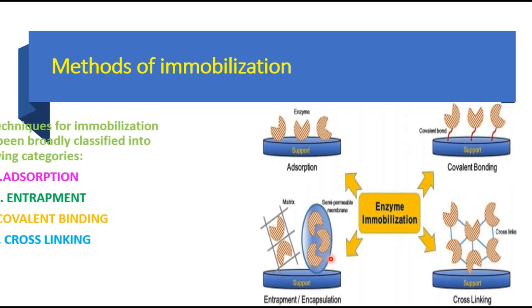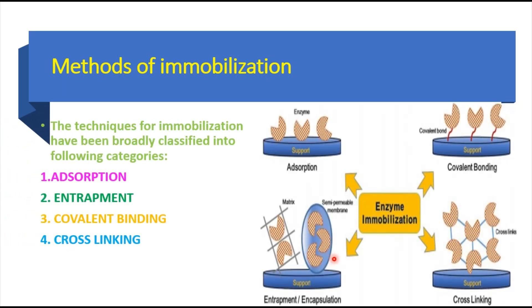Coming to the methods of immobilization, they are basically classified into four categories: the first is adsorption, the second is entrapment or encapsulation, the third is covalent bonding, and the fourth is cross-linking. In this video, we are going to discuss only two types: adsorption and entrapment.